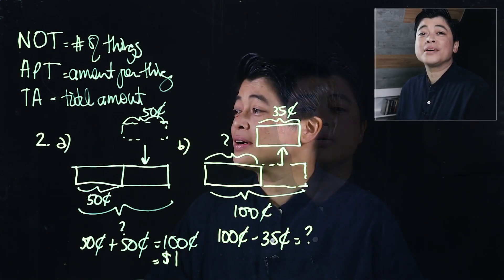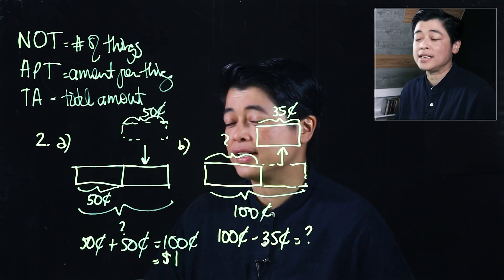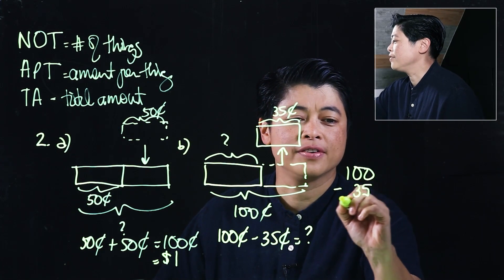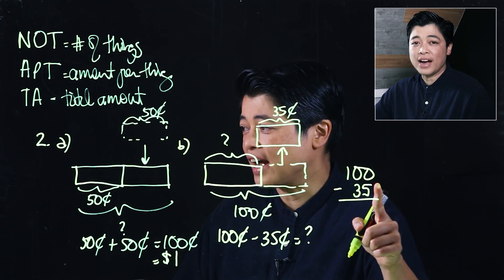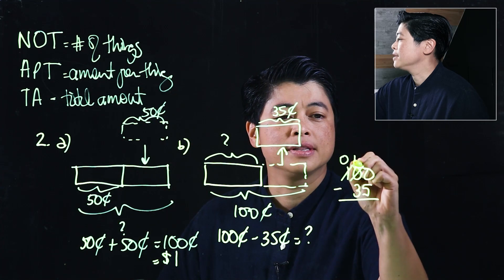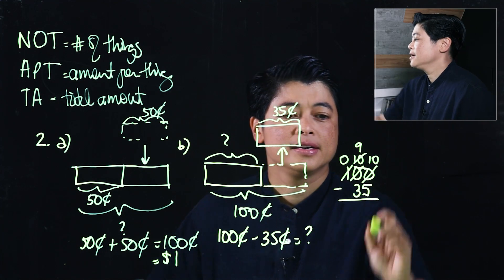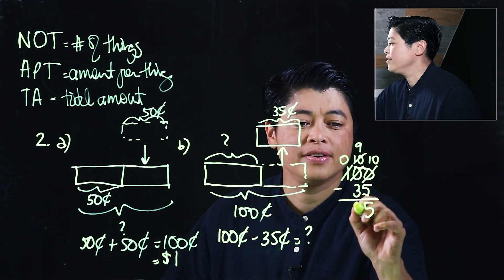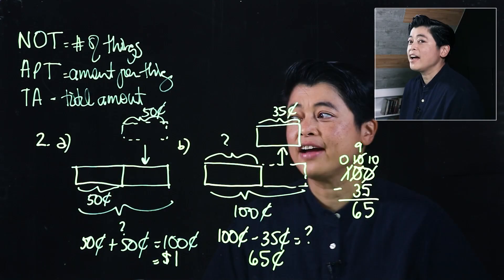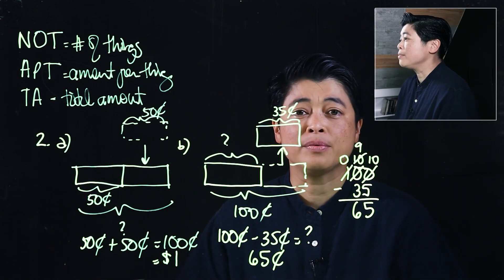This is a computational problem, so we write it vertically: 100 minus 35. We can't take five from zero, so we borrow — giving us 10 in the ones place, 9 in the tens, and 0 in the hundreds. That gives us 5 in the ones and 6 in the tens: 65 cents left after she spends 35 cents.